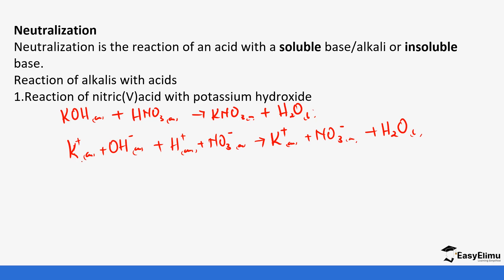Potassium ions are aqueous in both reactants and products, so we cancel those out. Hydroxide ions are aqueous in the reactants but they form water (liquid), so we cannot cancel them. Hydrogen ions are also aqueous but form water, so we cannot cancel those. Nitrate ions are aqueous in both reactants and products, so we cancel those out. We are left with: OH⁻ + H⁺ → H₂O. This is the neutralization ionic equation.